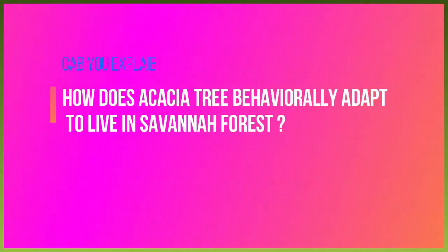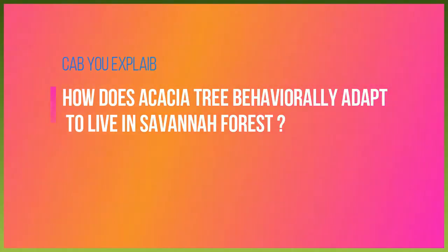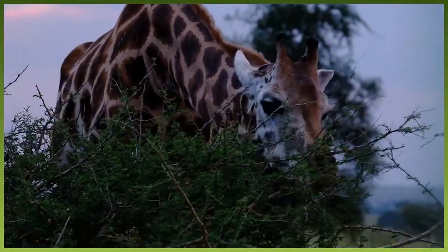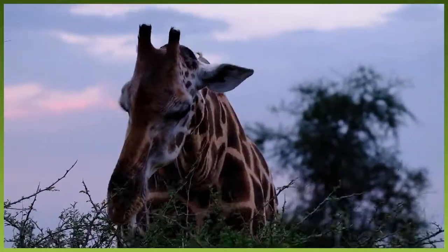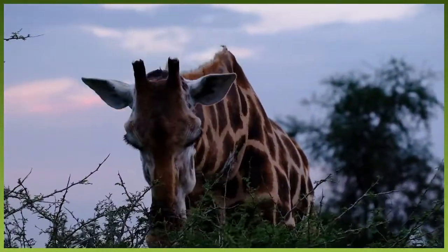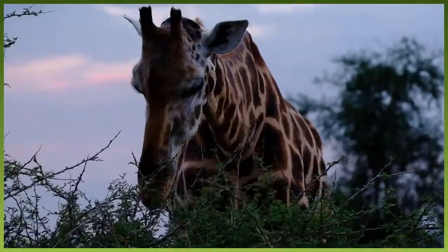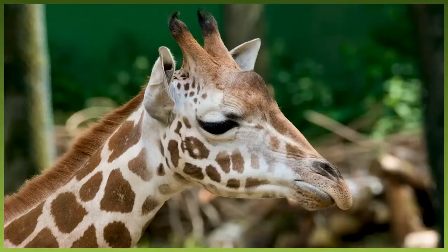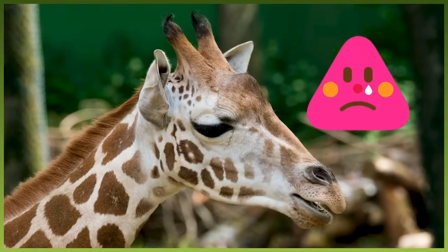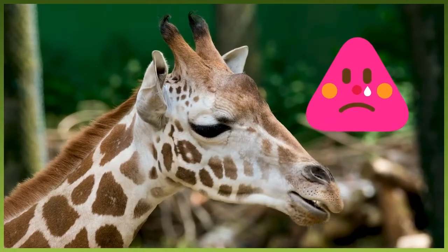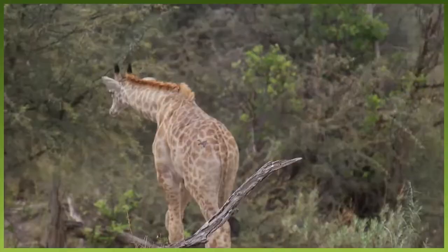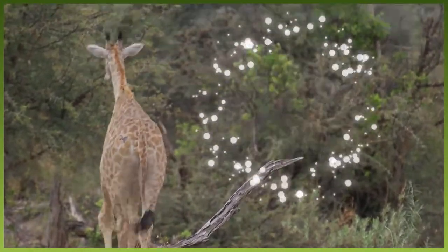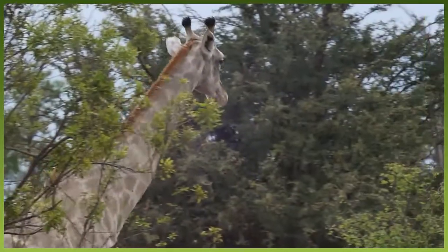How does the acacia tree behaviorally adapt to live in Savannah Forest? The acacia tree can defend itself as follows: when an animal begins eating the leaves of the acacia, the tree begins to produce a poison that makes the leaves taste very bad. Then it sends a smelly message in the wind to nearby acacia trees, telling them to start making the same poison.